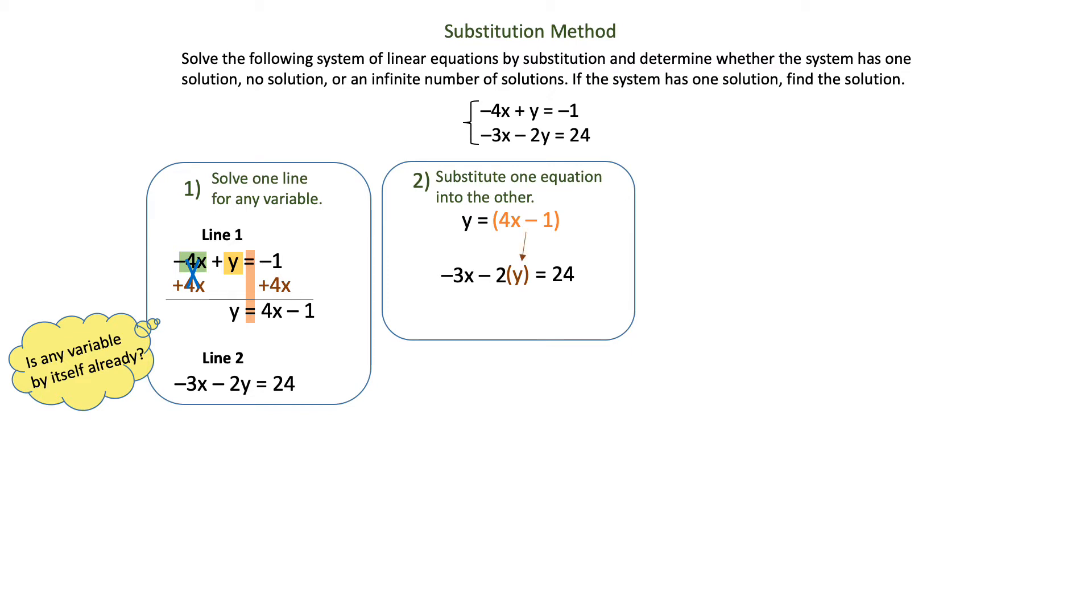You do have to make sure that it's one equation into the other equation. So here's what that looks like. I'm going to take the 4x minus 1 and replace the y. The y is completely gone. It's now going to be negative 3x minus 2 multiplied by the quantity 4x minus 1, and that will equal 24.